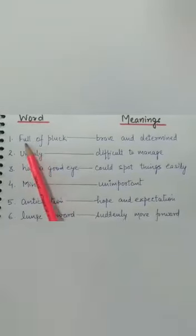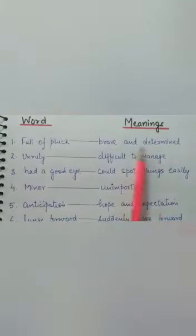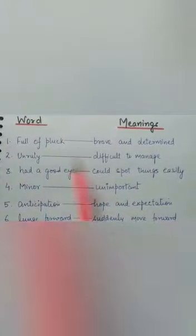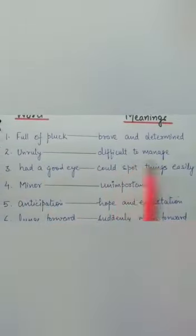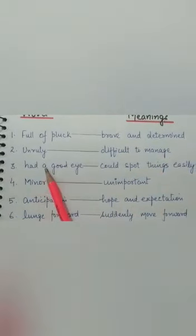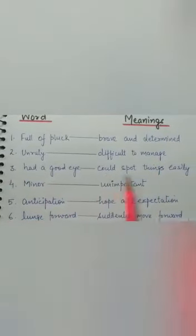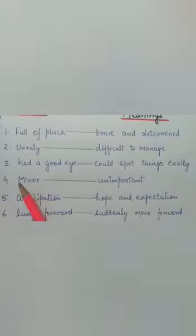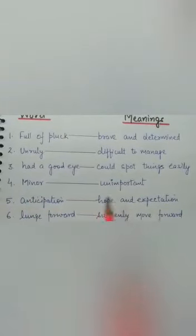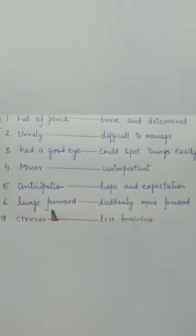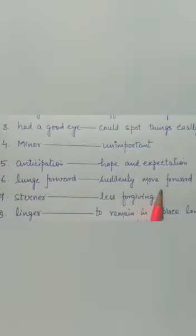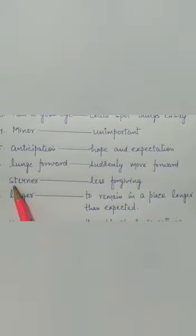First is full of pluck, and the meaning is brave and determined. Unruly means difficult to manage. Had a good eye could spot things easily. Minor means unimportant. Anticipation means hope and expectation. Long forward means suddenly move forward.